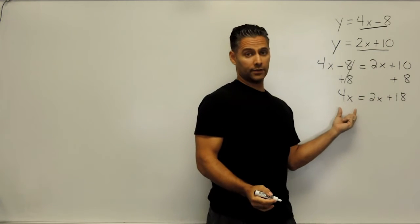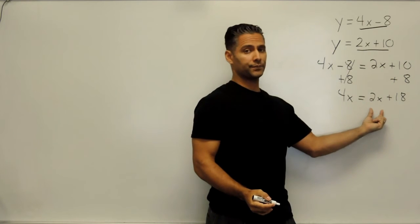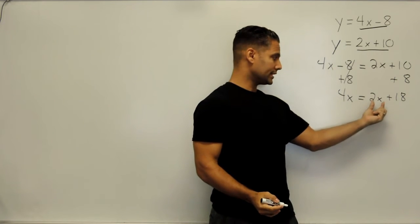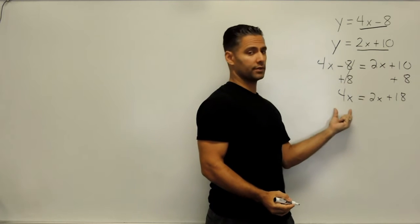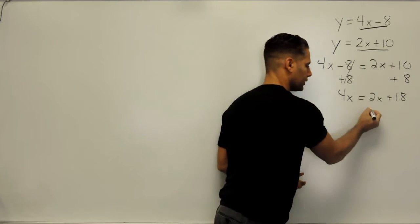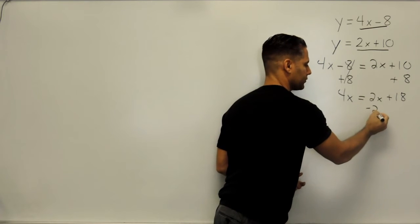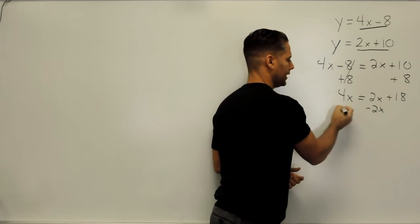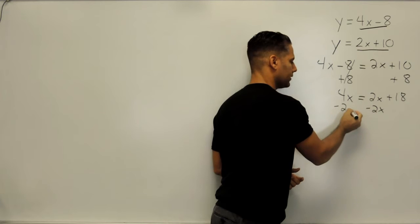Now notice we have an x over here and an x over there. So what we are going to do is we're going to take this x term on the right-hand side and send it over to the left. Because this is a positive 2x, we are going to write negative 2x right beneath it, and write the same thing on the left-hand side.